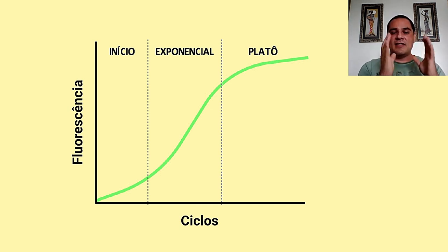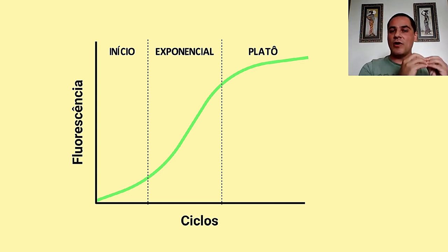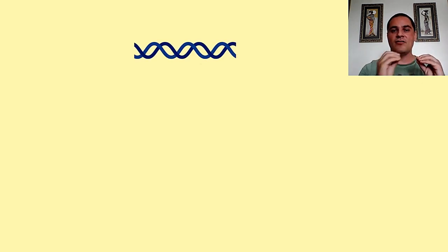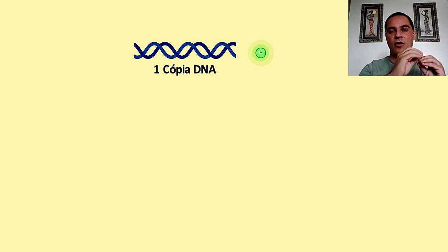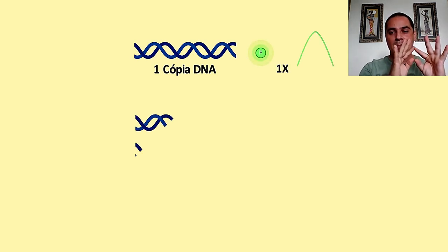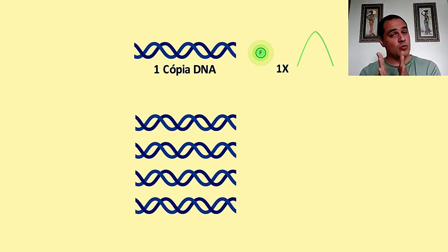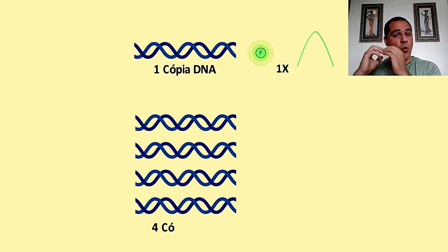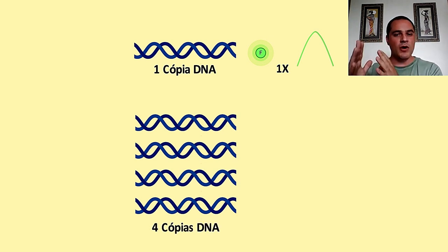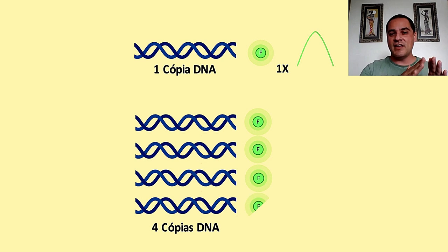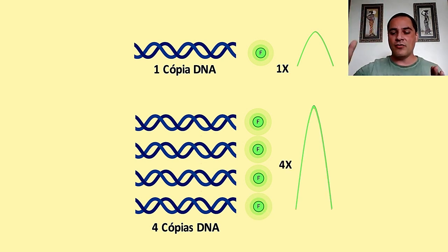A gente vai ter todos os ingredientes com a presença do fluoróforo que vai se ligar nas moléculas de DNA. No começo, quando a gente tem apenas uma cópia, a gente vai ter uma quantidade X de fluoróforo naquela molécula de DNA. A partir do momento em que essas cópias forem sendo amplificadas — uma cópia para duas, a gente vai ter um aumento de duas vezes do fluoróforo; depois de dois para quatro, quatro vezes; quatro para oito, dezesseis, trinta e dois — a gente vai tendo esse aumento progressivo da fluorescência.